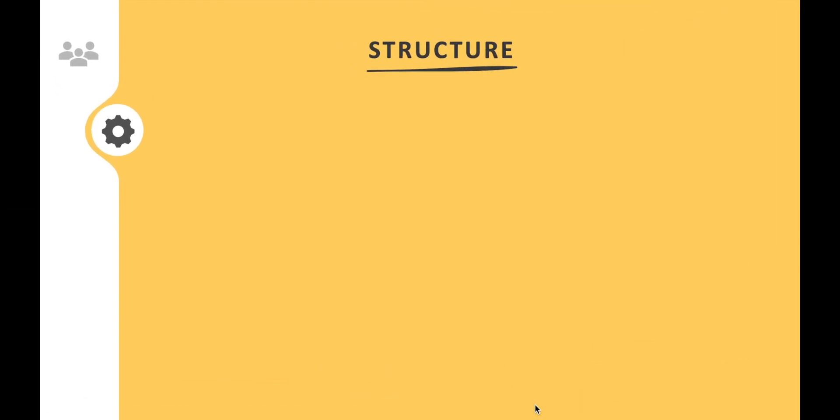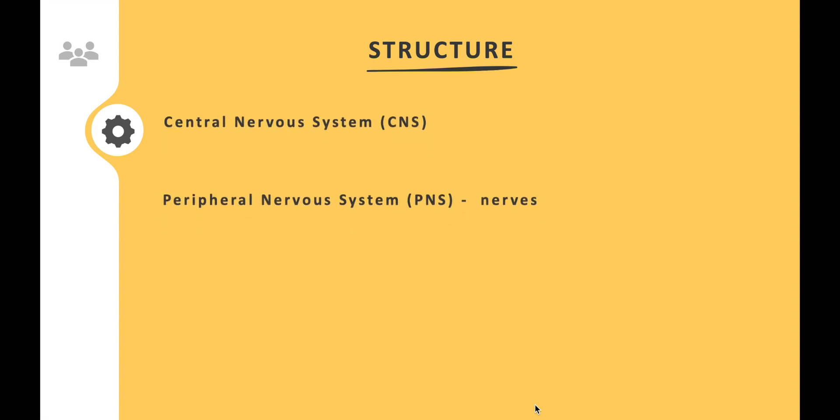We define neuroscience as the study of the nervous system of the human body. We look into the structure and organization of the nervous system and try to understand the roles different parts play. Fundamentally, we break the nervous system into two parts: the central nervous system and the peripheral nervous system. The central nervous system is the command center, and the peripheral nervous system assists by relaying information to and from it, then communicates that information to the relevant organ.